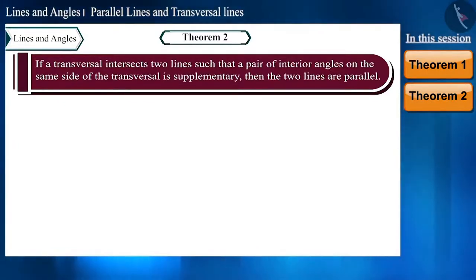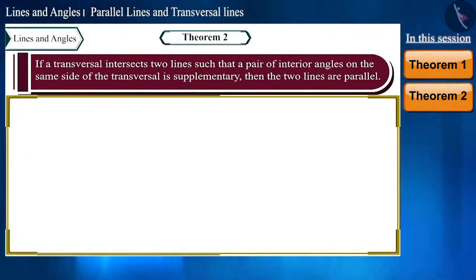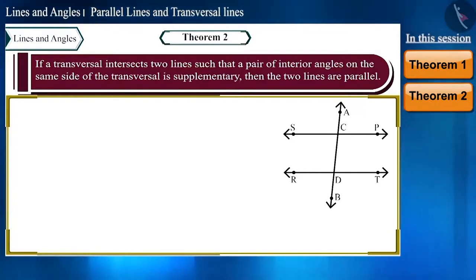Let's draw a figure like this. Here transversal AB intersects the two lines SP and RT at point C and D respectively, in such a way that the sum of these two interior angles is 180 degrees.